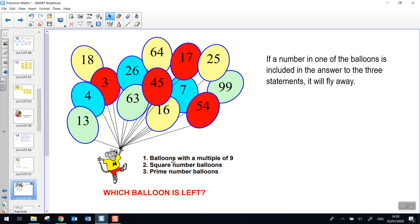And here are the three statements. First of all, balloons with a multiple of nine. So if one of these numbers is a multiple of nine, the balloon will fly away. Square number balloons. So one of these numbers is a square number. It will fly away.